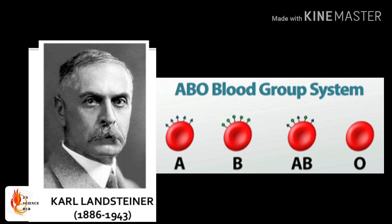He understood there are four different types of blood present among humans. They are blood group A, B, AB, and O.